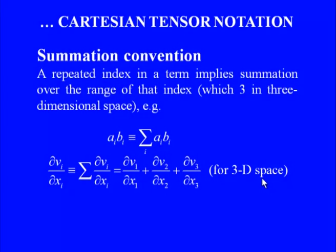An important convention in Cartesian tensor notation is the summation convention, also known as Einstein summation convention. Whenever a repeated index appears in a term, it implies summation over the range of that index — which is three in three-dimensional space. For example, a_i·b_i represents the sum over i of a_i·b_i, which is the dot product of vectors a and b.